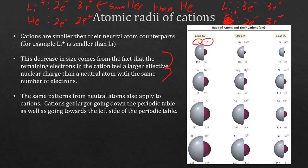The same periodic trends that apply to neutral atoms also apply to cations of the same charge. Cations get larger going down the periodic table and towards the left. For example, sodium plus is larger than lithium plus — they're both plus one, but sodium is further down the periodic table. This continues: potassium plus is bigger than sodium plus, and rubidium plus is larger than potassium plus. Going from left to right, rubidium plus is larger than strontium two plus.